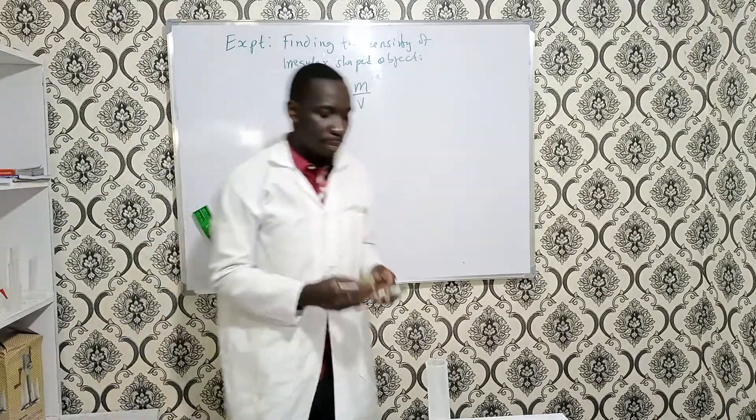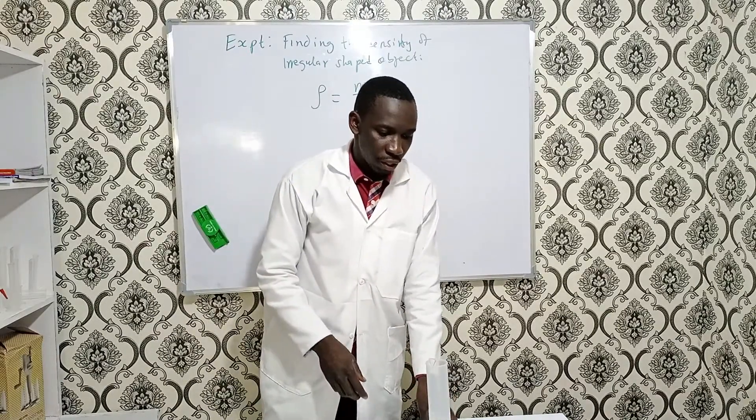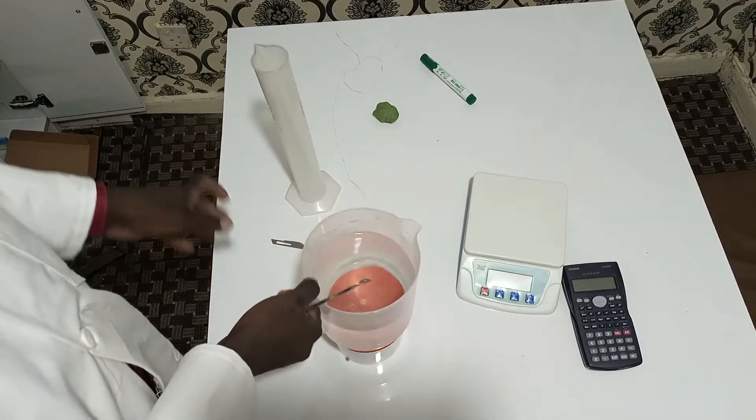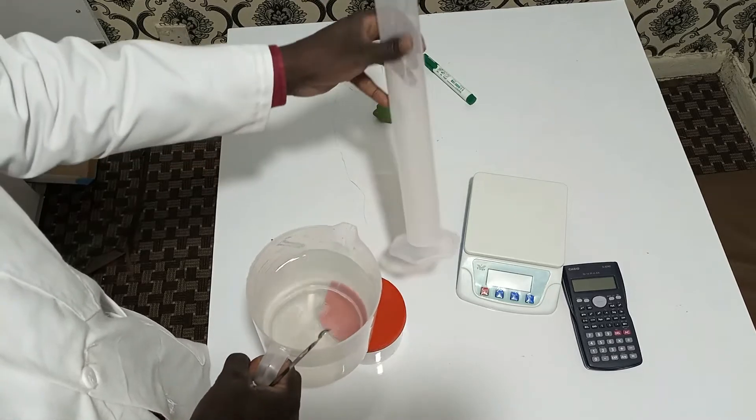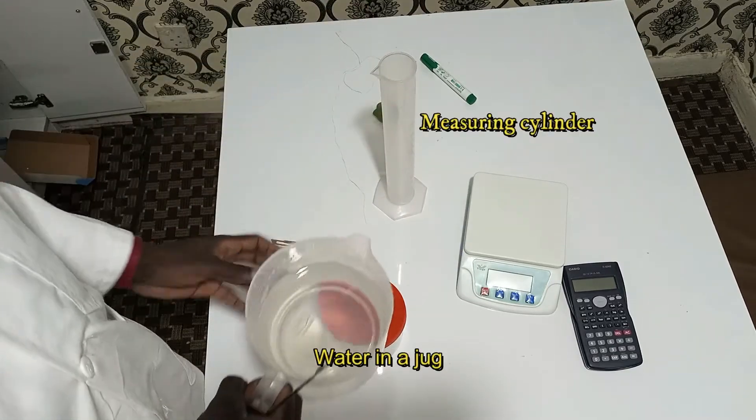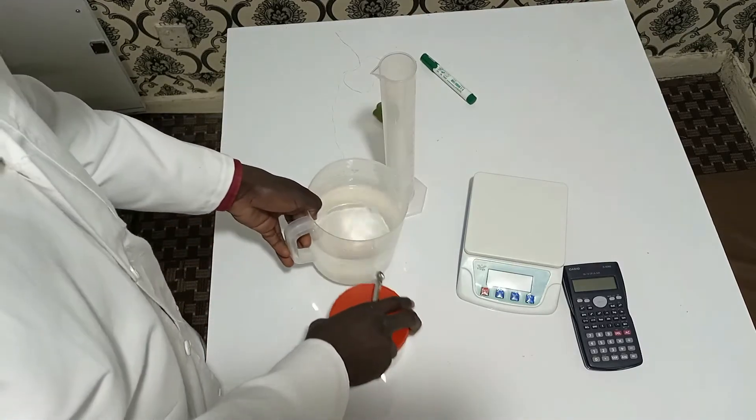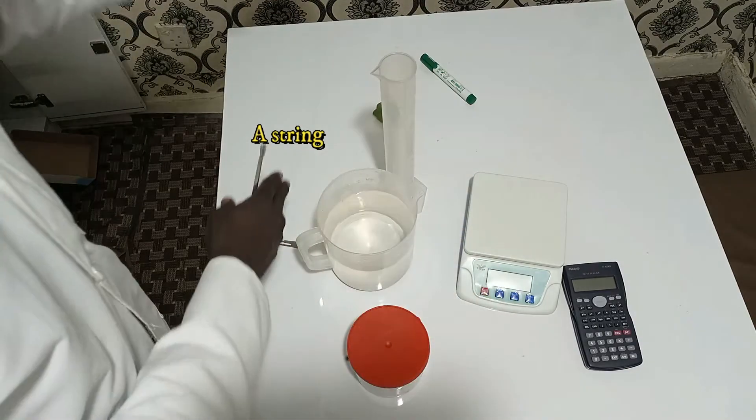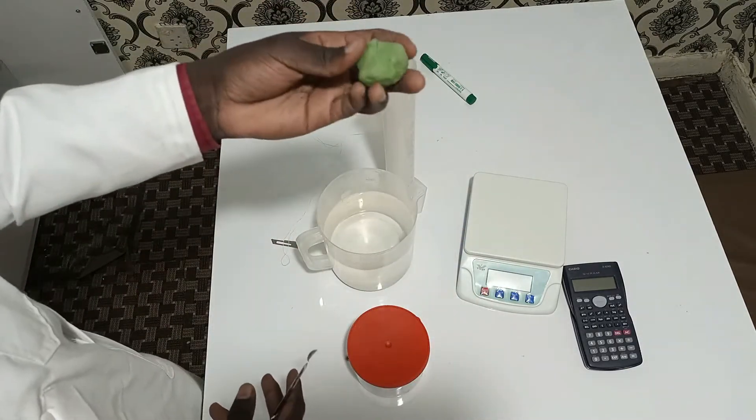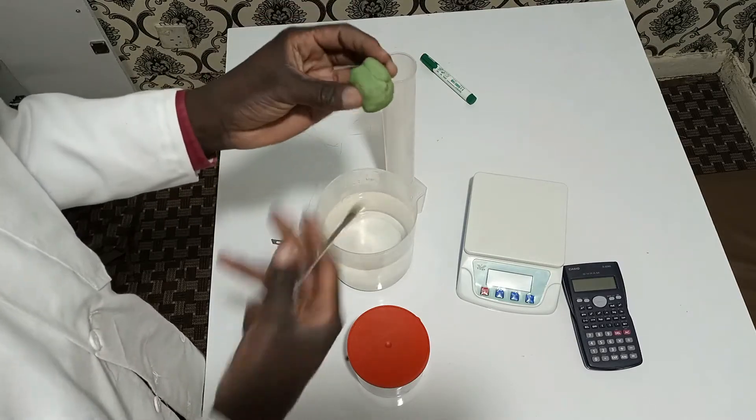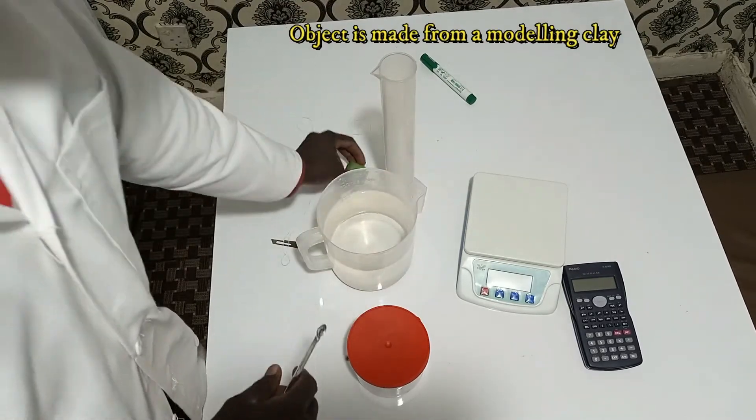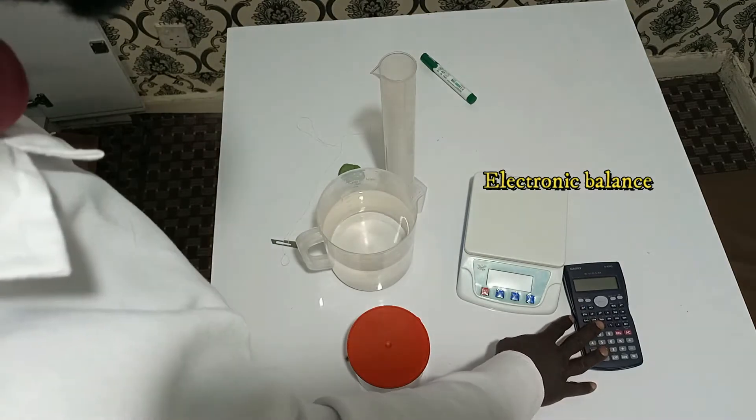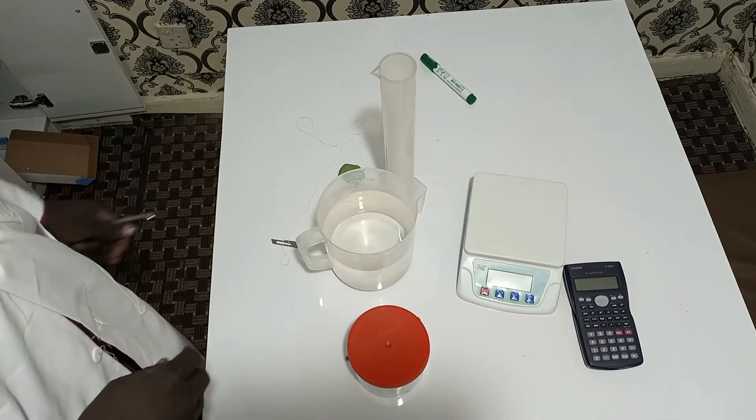I have some apparatus here that is going to help us to do so. Here with me, I have some water here in a jar. Then I have a measuring cylinder. By now, we should be having an idea what I'm going to use this water for. Here, there is a string. The object that you want to find its density is this regular shape. We can't use an instrument to measure its dimension. I have a balance here. Of course, you know the use of a balance. And we may need a calculator because there is going to be some calculation.